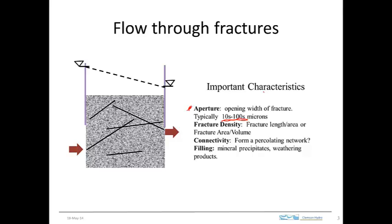Fractures don't occur just as isolated entities. Typically there are multiple fractures, and fracture density is a way to characterize how many fractures there are in a unit volume. Fracture density can be thought of in several different ways. If you conceptualize a fracture as a break that has a certain surface area, then the total surface area of fractures in a given volume is one measure of fracture density, but there are other measures we'll see in a moment.